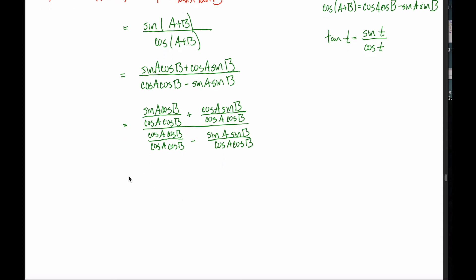If you're with me this far, you get the really satisfying step of canceling all sorts of stuff out. In the first term, cosine of b and cosine of b cancel, leaving sine of a over cosine of a. In the next term, cosine of a and cosine of a cancel, leaving sine of b over cosine of b. Down in the denominator, cosine of a and cosine of a cancel, cosine of b and cosine of b cancel — everything cancels, leaving just the one. And over here, nothing cancels, so I have sine of a over cosine of a times sine of b over cosine of b.